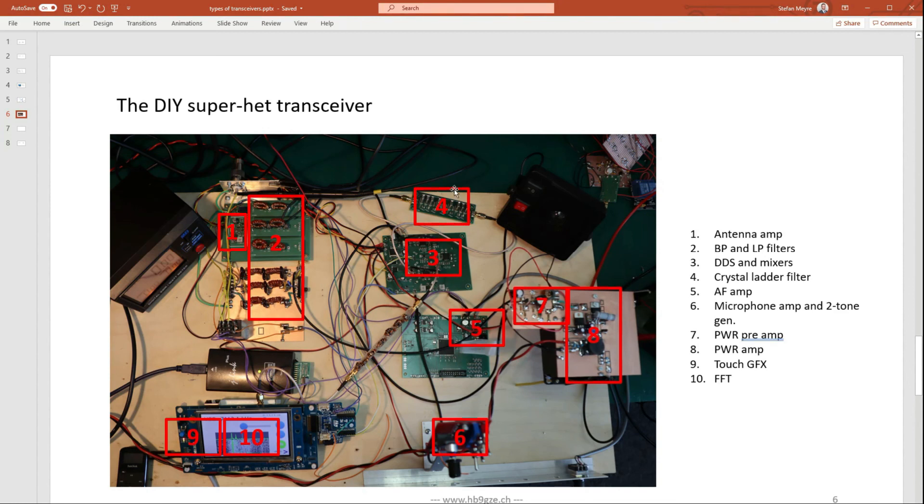Okay, and then after this mixing of the signal, we go through the crystal filter, crystal ladder filter, and the audio amplifier from the audio amplifier to the loudspeaker. And transmitting means we have a microphone amplifier with a two-tone generator. This two-tone is a Wien bridge generator with two frequencies that are not multiples of themselves.